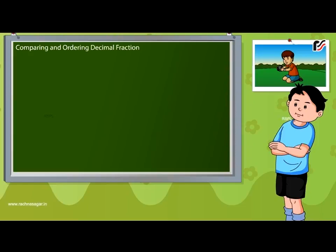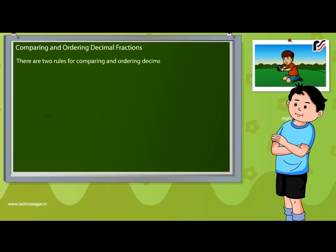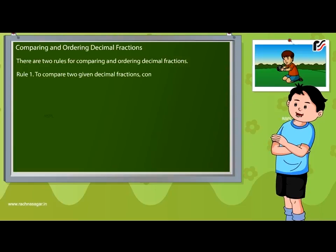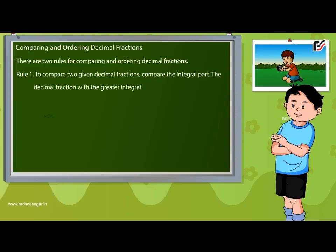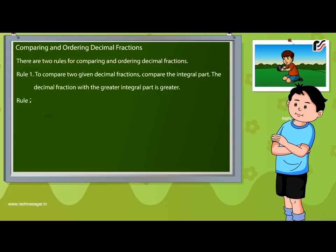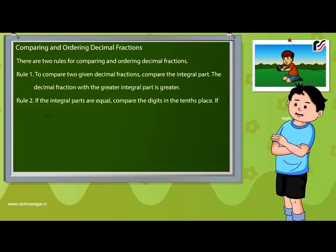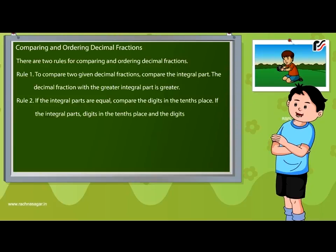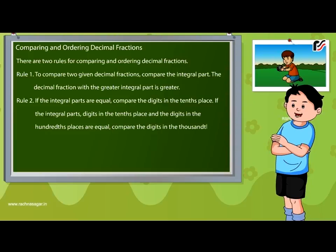Comparing and ordering decimal fractions. Rule 1: To compare two decimal fractions, compare the integral parts — the decimal with the greater integral part is greater. Rule 2: If the integral parts are equal, compare the digits in the tenths place. If those are also equal, compare the hundredths place, then the thousandths place, and so on.